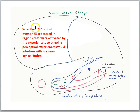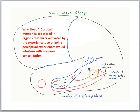Why do this memory processing during sleep? The cortical memories are stored in regions that were activated by the experience, so ongoing perceptual experiences would interfere with memory consolidation. If we're going to store memories in the cortex, but the cortex is also used for perceiving things when we're awake, we don't want that interference. When we go to sleep and become unconscious, we don't have ongoing perceptual experiences that might interfere with this consolidation process.